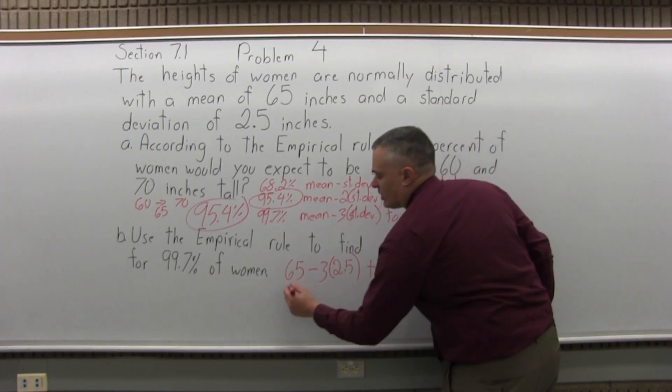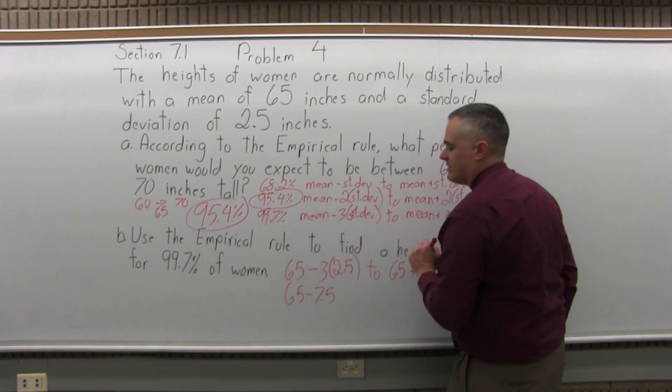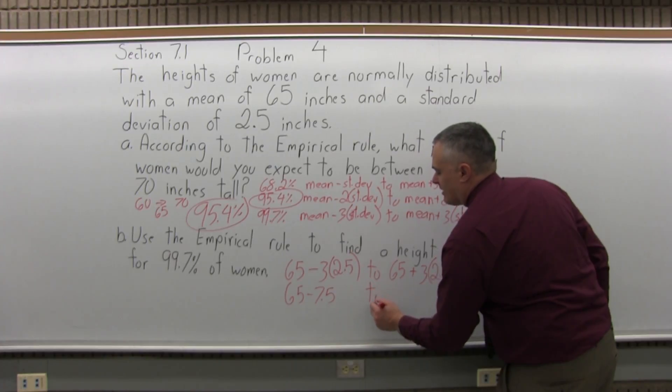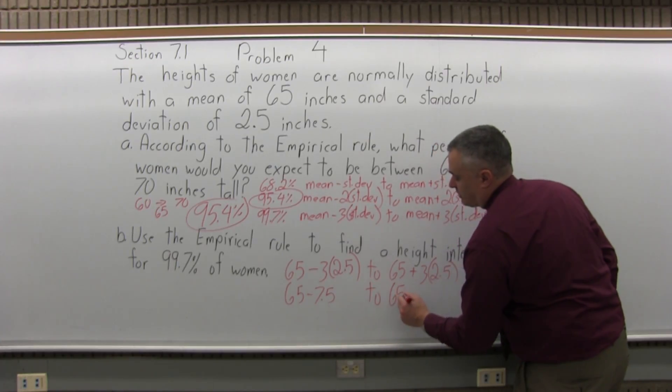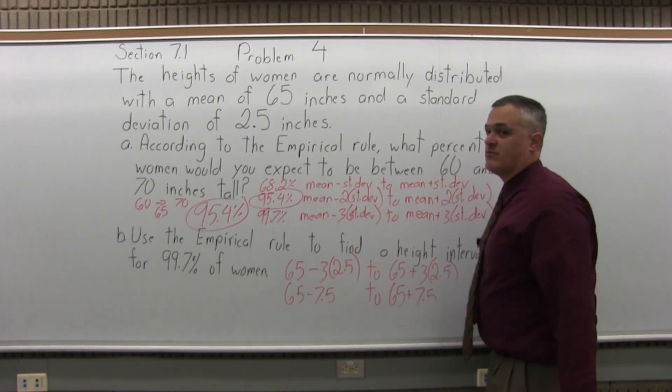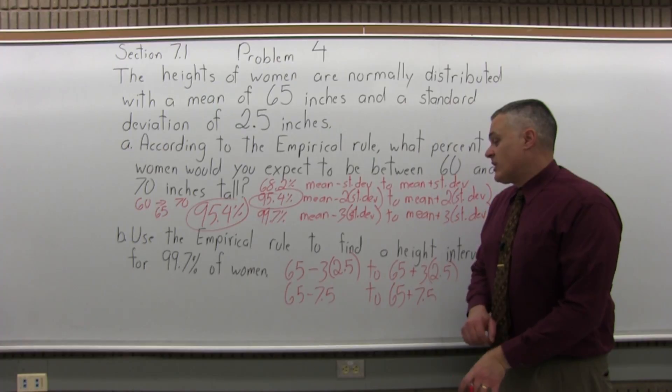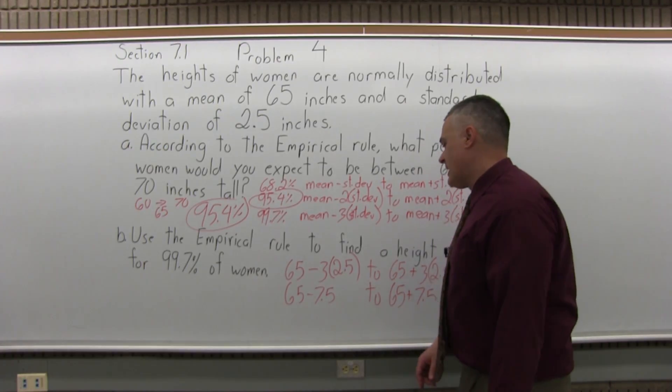So the lower end will be 65 minus 7.5. And then the upper end will be the same numbers but with a plus, 65 plus 7.5. 3 times 2.5 is 7.5. So now on the small end, if you subtract 65 minus 7.5, that would be, let's see, if I take off 5 inches, it would be 60, so it would be 57.5 inches.